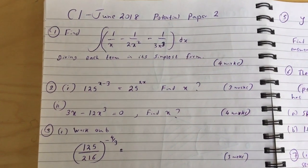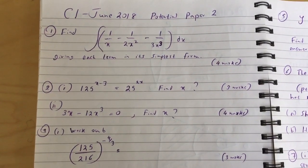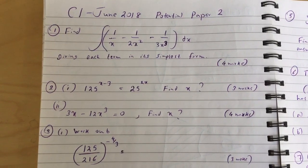Question 1: Find the integral of 1 over x minus 1 over 2x squared minus 1 over 3x cubed dx, giving each term in its simplest form.